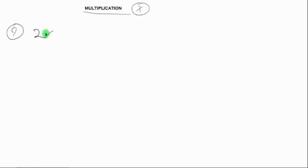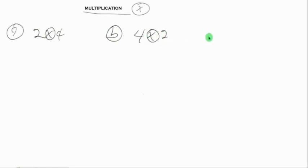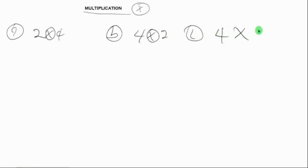We're going to start with example A: two times four, everything in mod five. For B we're solving four times two — we're using the same numbers to see if the answers will be equal to each other. For C we'll have four times five, everything in mod five.